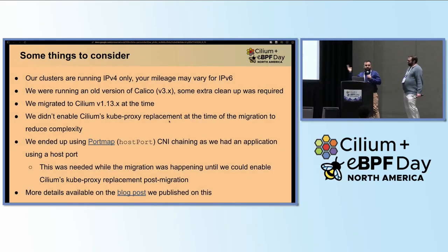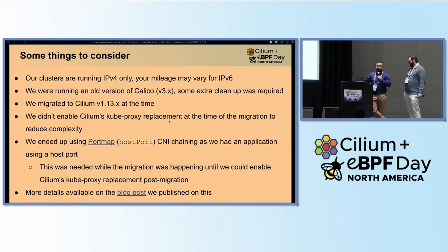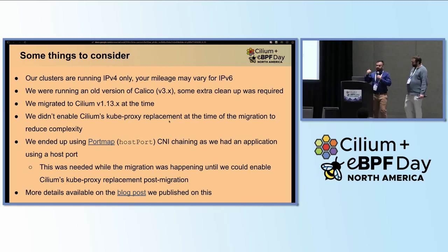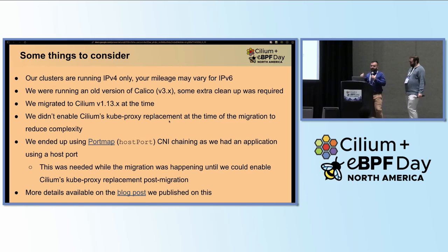Some things to consider: in our environment, our clusters are only running IPv4, so your mileage may vary for IPv6 clusters. We were actually running a pretty old Calico version, so some extra cleanup was needed to flush out some of the IP table rules. We kept the kube-proxy replacement out of this migration to reduce complexity, but we did it eventually. We did shoot ourselves in the foot a little because we had some host port services that we needed to enable the port map — which is CNI chaining — to allow us to reach those host port services until we were able to run the kube-proxy replacement. We also have a blog post about this that has more details.